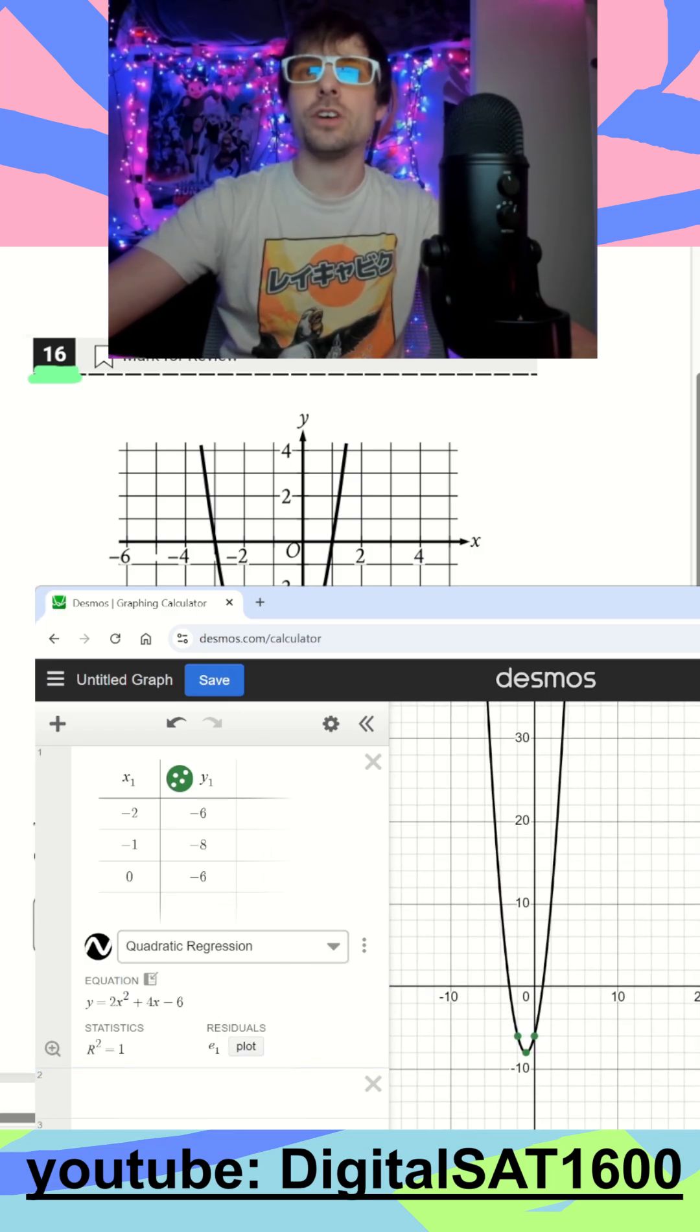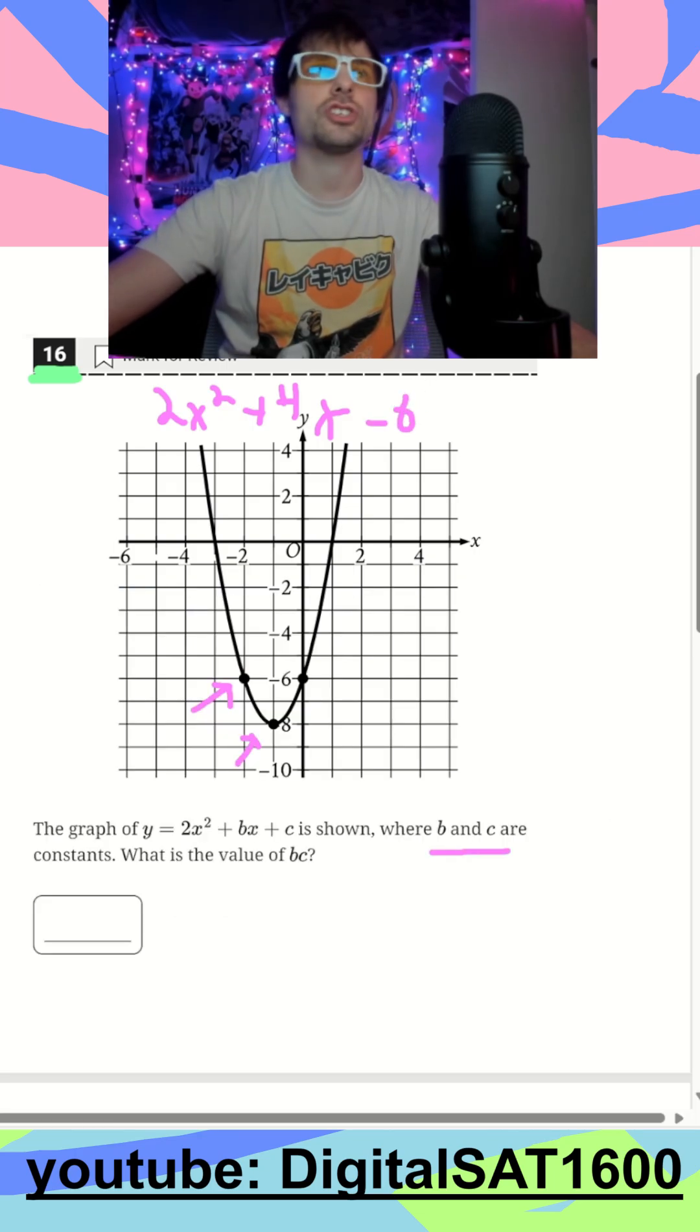And there is my function. There is my equation: 2x squared plus 4x minus 6. Let's write that down up above so we remember 2x squared plus 4x minus 6. Let's hide Desmos now and finish it.